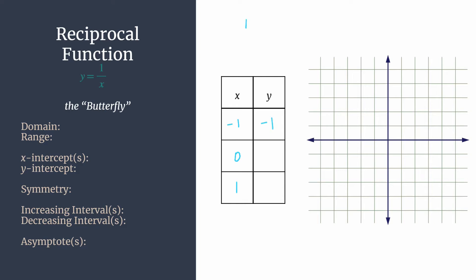We run into an issue if we try to plug in 0 because we end up with 1 divided by 0, and we can't have that. That's an invalid output. You can never divide by 0. So you can write undefined or just put a dash there. There will be no point on our graph where x is 0. That's a huge clue that you have a vertical asymptote. When we substitute in 1, we get an output of 1.